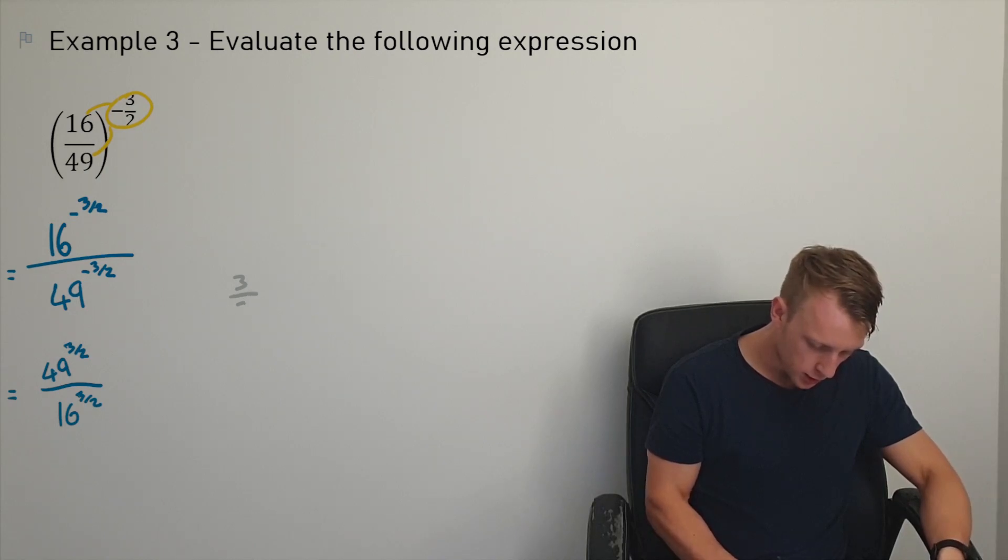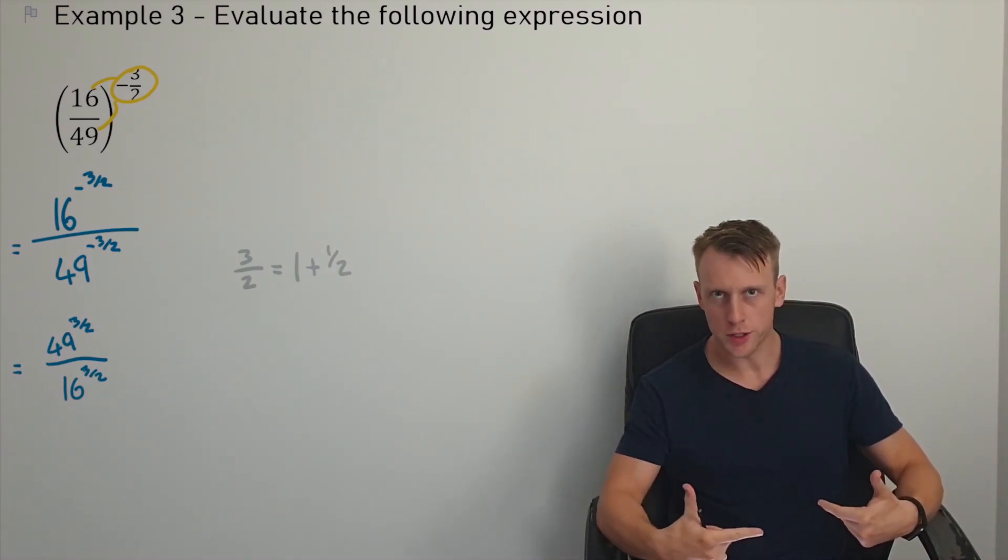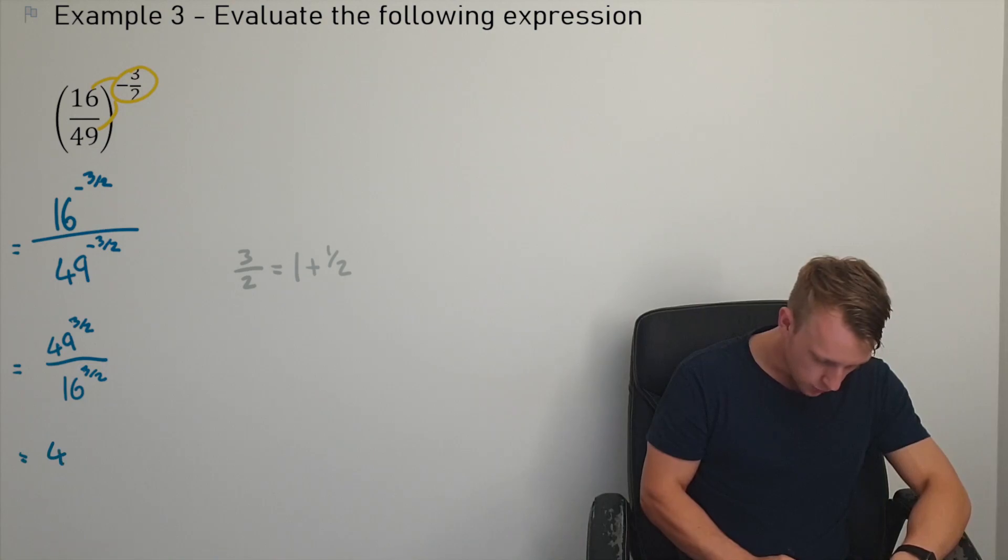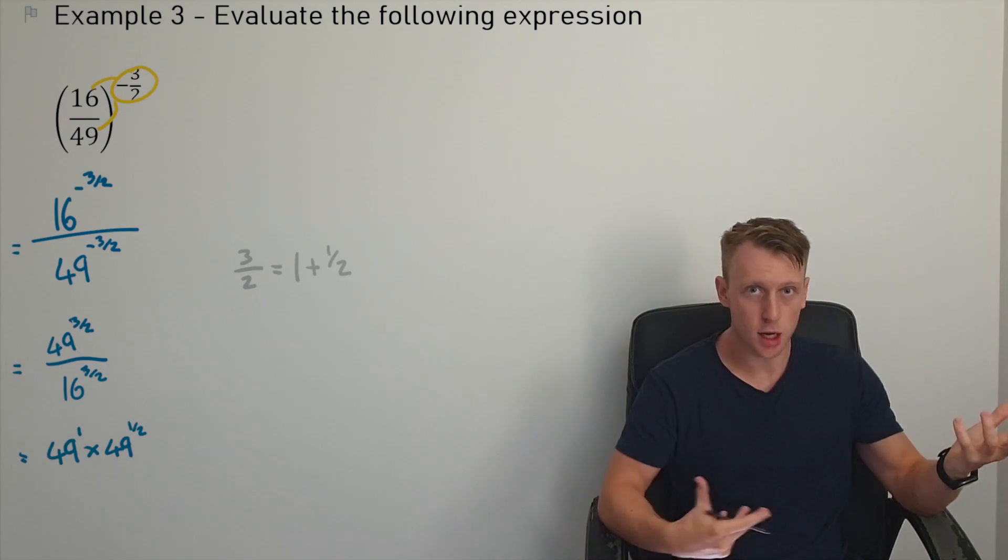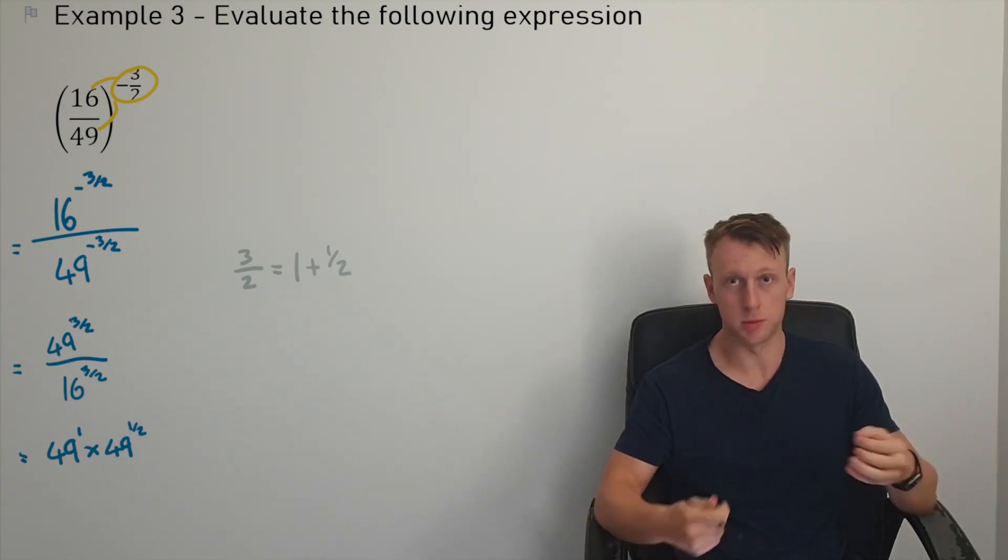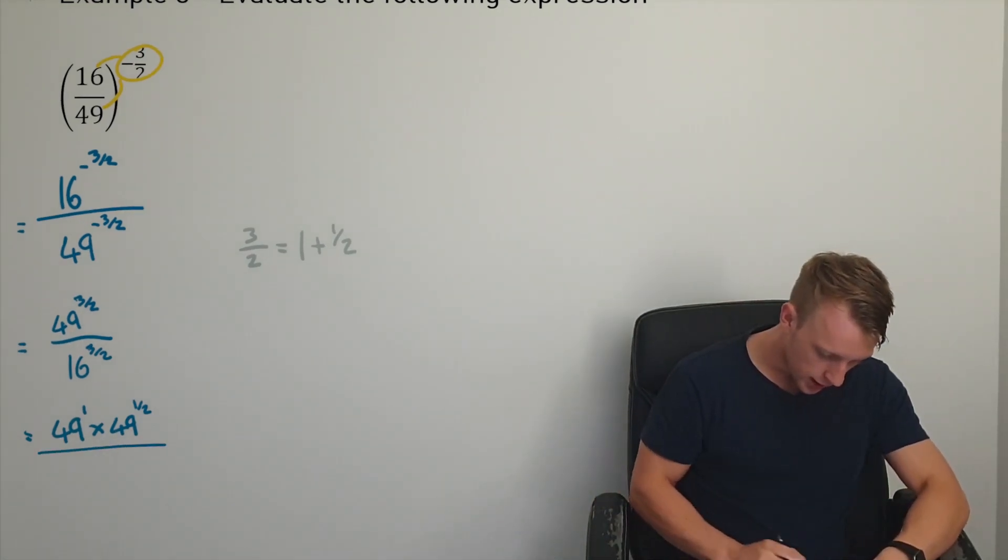And so here we can see we've got a fractional indice. What I'm going to do is I'm just going to split it up. If I've got 3/2, that's the same as just having 1 plus a half. So I can pretty much do the reverse of the first index law where I can just write this as 49 to the power of 1 multiplied by 49 to the power of a half. Because if I was to bring those powers together, I would add them. So I'd get 3/2, but I'm just doing the reverse of it. And so this is because we can simplify it a bit easier. And I'm going to do the same thing on the numerator, the denominator.